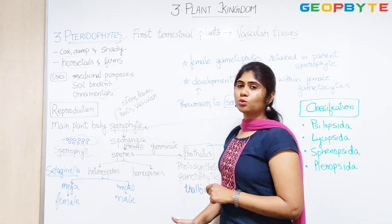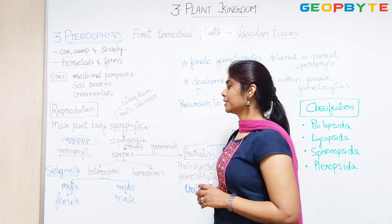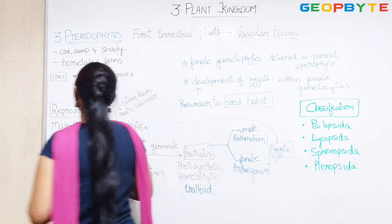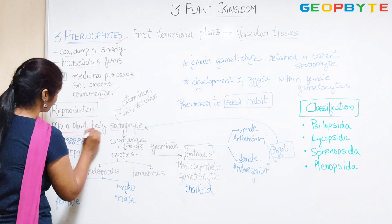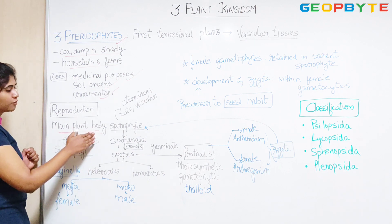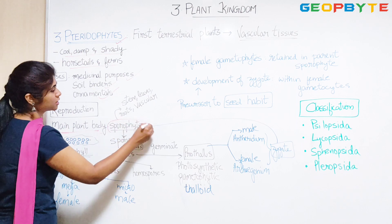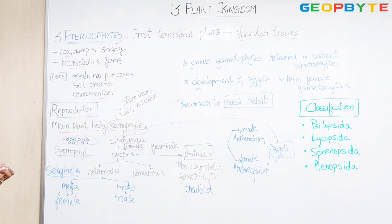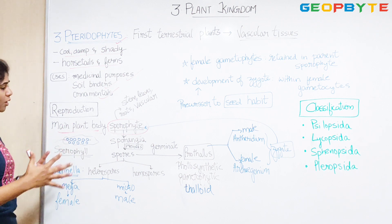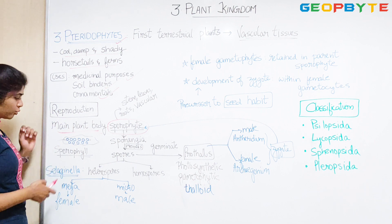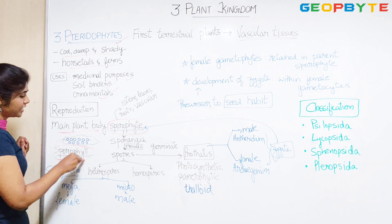Those are the uses found under Pteridophytes. Coming to reproduction, we should look at the main plant body. In case of Bryophytes, the main plant body was a gametophytic phase. In case of Pteridophytes, the main plant body is a sporophytic phase, so the body is going to be a sporophyte, which is a leaf-like structure.